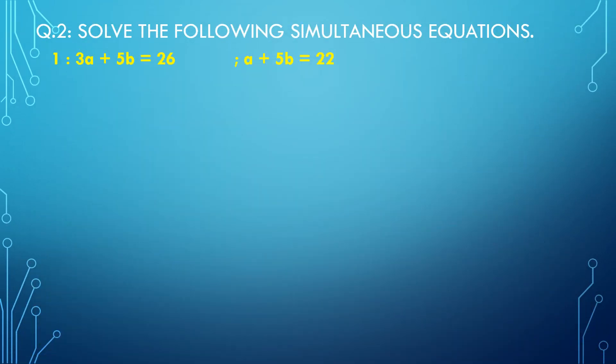From the textbook, it is practice set 1.1 question number 2: Solve the following simultaneous equations. Our first example is 3A plus 5B equal to 26, and A plus 5B equal to 22. We will solve this with both methods — the substitution method and the elimination method.